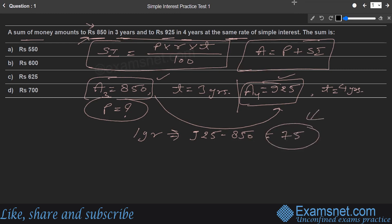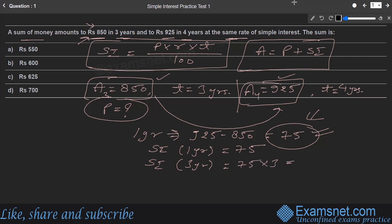₹75 is the simple interest for one year. Since simple interest is directly proportional to time, the simple interest for three years is 75 × 3 = ₹225.